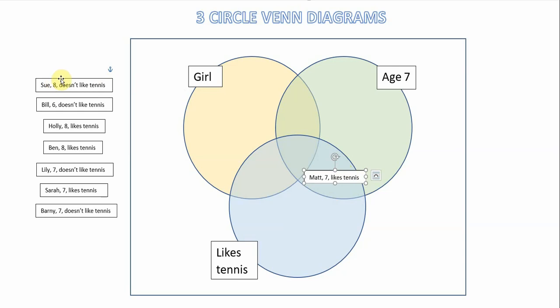Our next child is called Sue, who's a girl. She's eight years old and she doesn't like tennis. So Sue belongs in the girls' set but she doesn't go in the age seven set or the like tennis set.